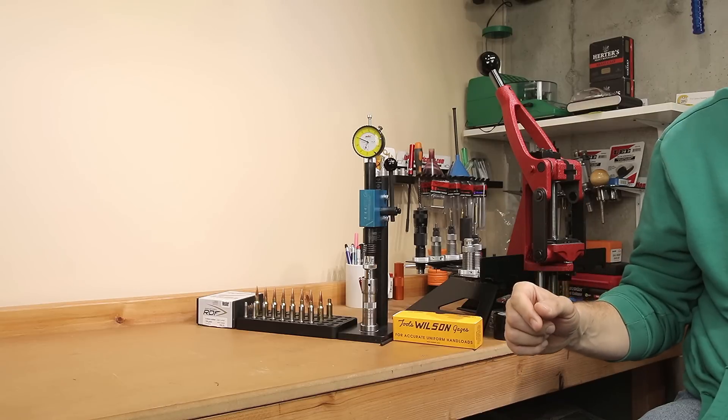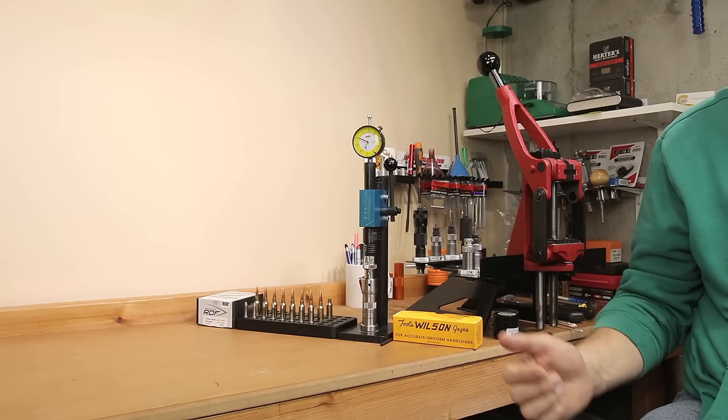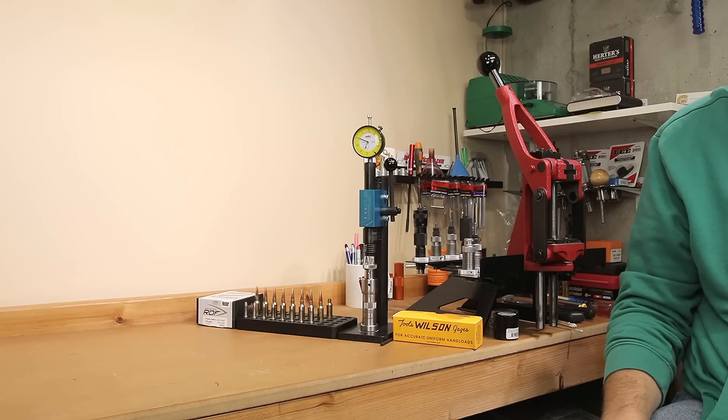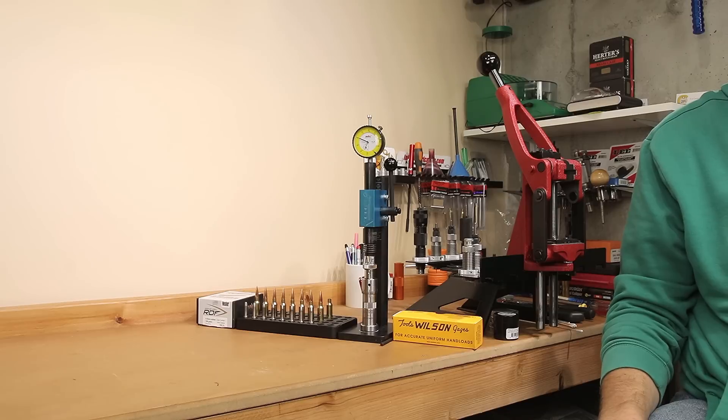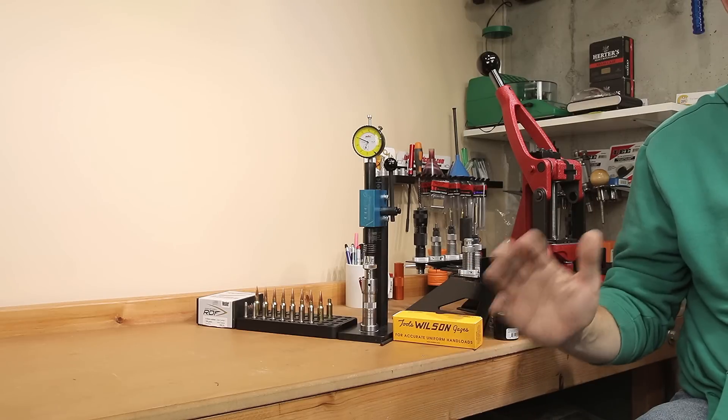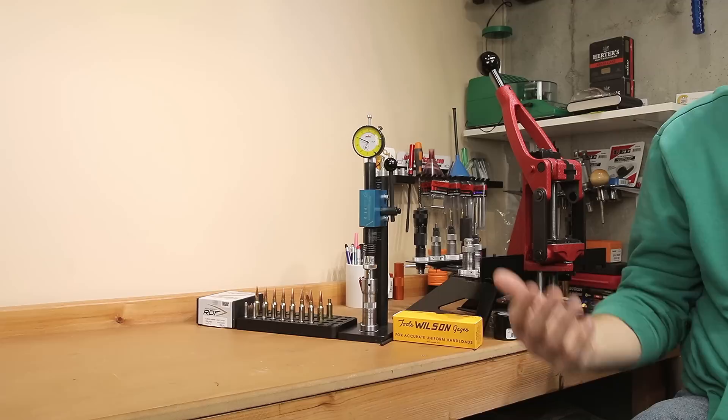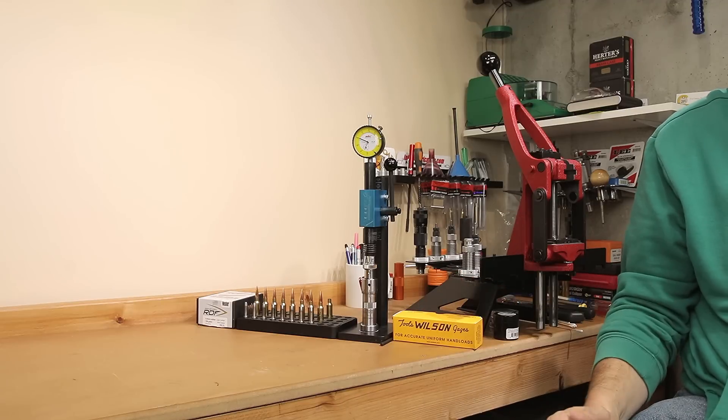So our first example for today, we're going to be using brass that I have previously retired, meaning I don't use it any longer, but it's nice to keep it around for examples. If I was to reload it, I certainly wouldn't expect consistency.